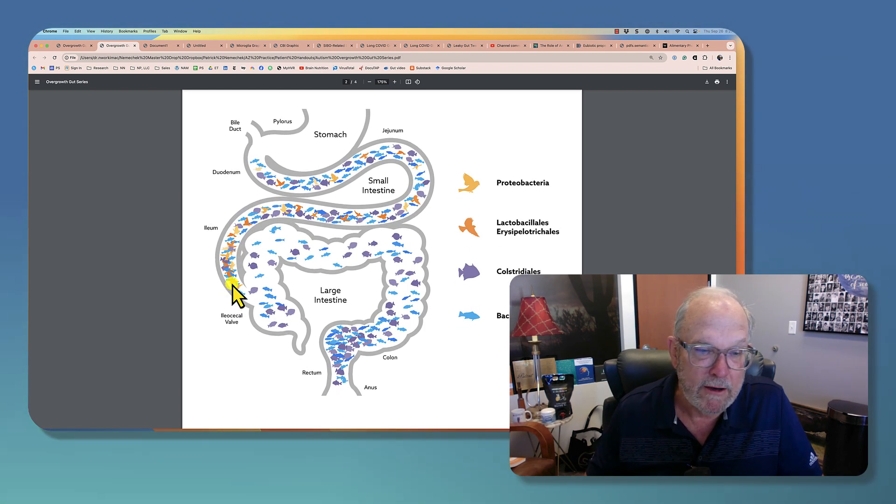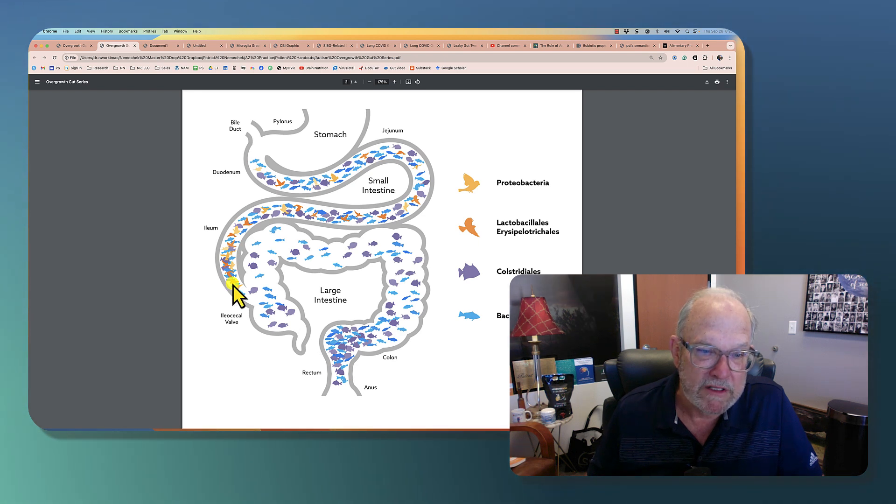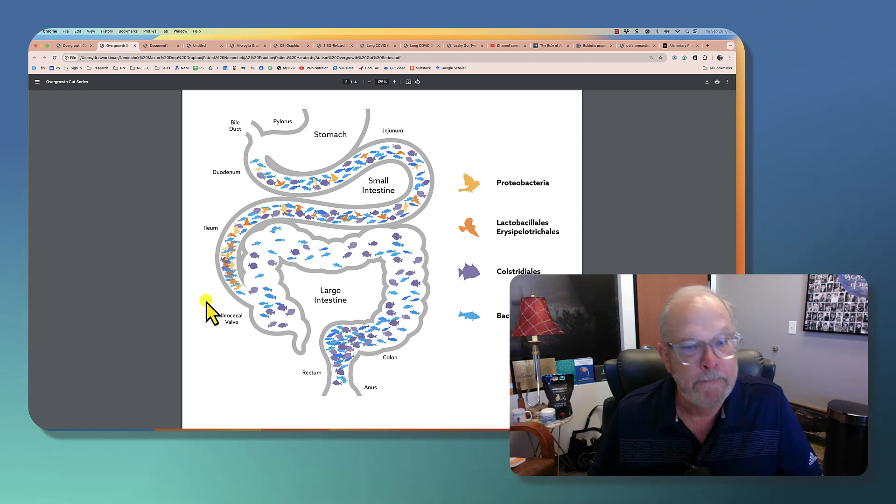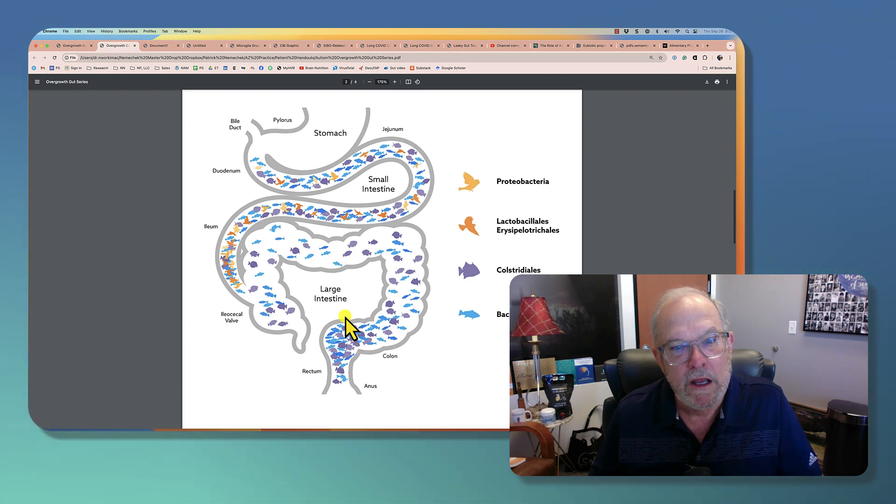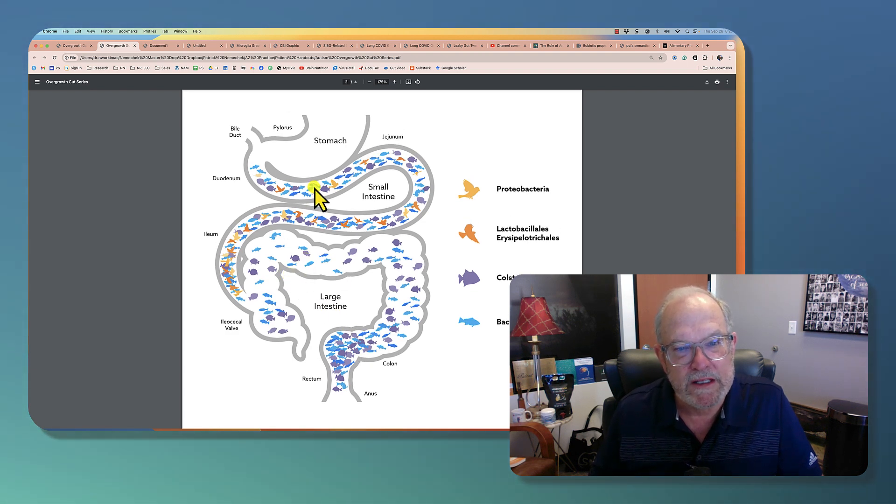What happens is all the bile gets reabsorbed into the bloodstream here. And the drug basically crystallizes and deactivates. So it won't kill the bacteria here. So whichever one or two species that were growing up here that you killed off, you're still gonna have copies of those down here. So you aren't gonna lose them.